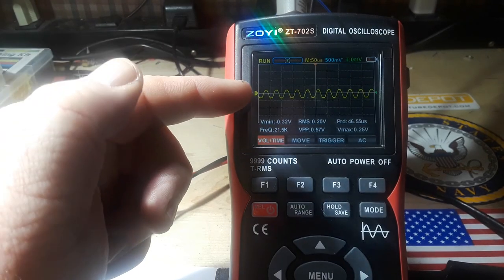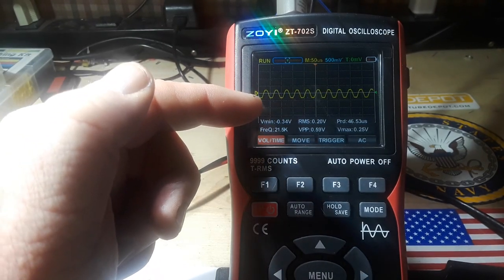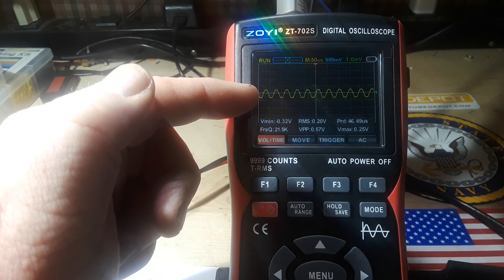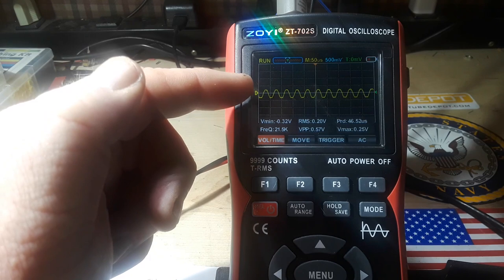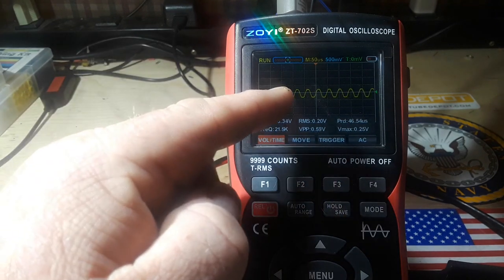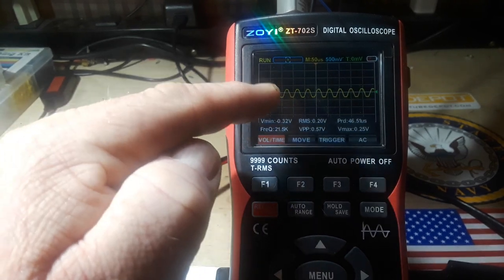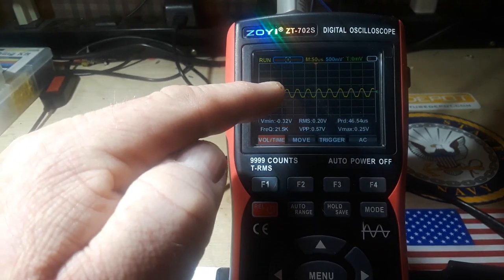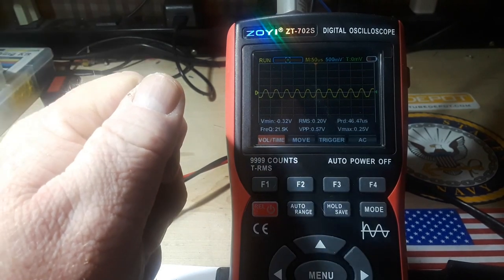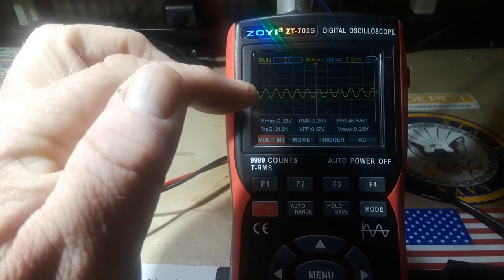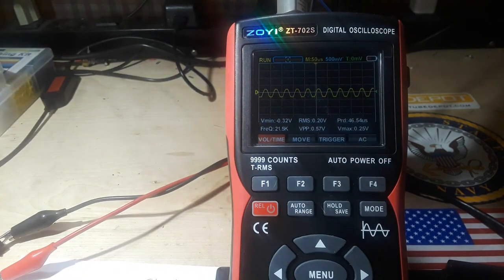You see that the frequency looks like it is steady at 21k, but if you pay attention to the waveform here, you'll notice that it is changing. And the space between the peaks and the troughs, the distance, that diagonal line there, that is the frequency changing.